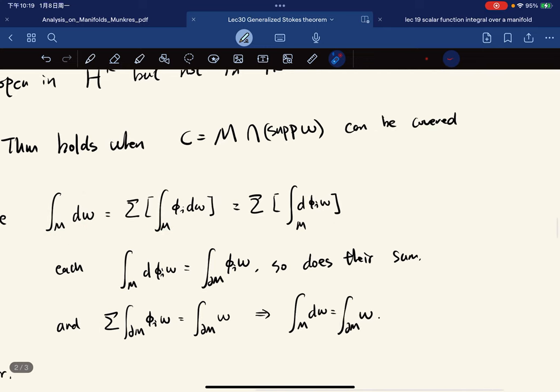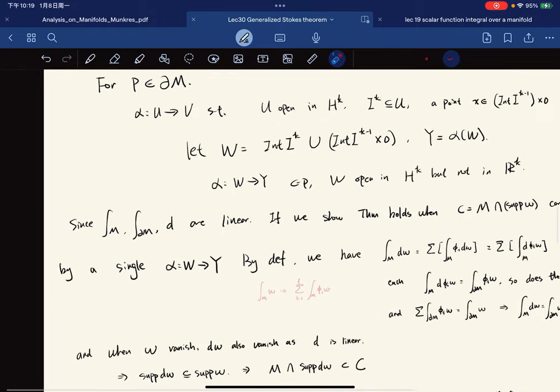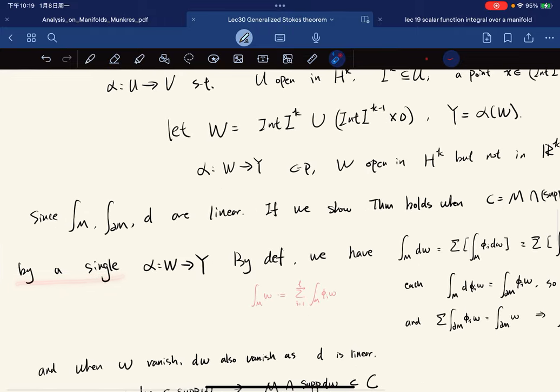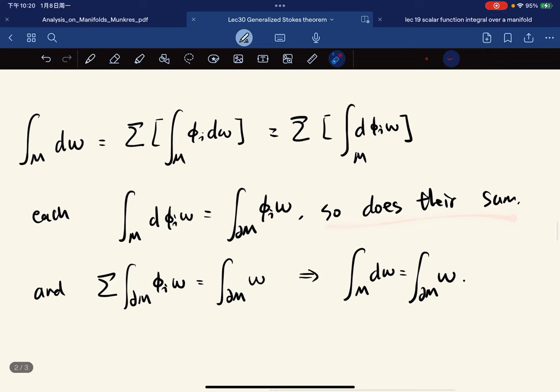And because d is linear, and since we proved that this can be done by a single coordinate patch, so these two are equal. This is our assumption because their support can be covered by single coordinate patch, because we're doing partition of unities. So we have this, so does their sum, so we can sum them up.